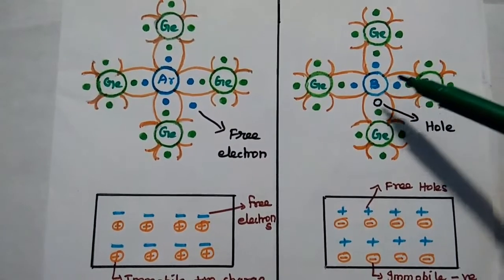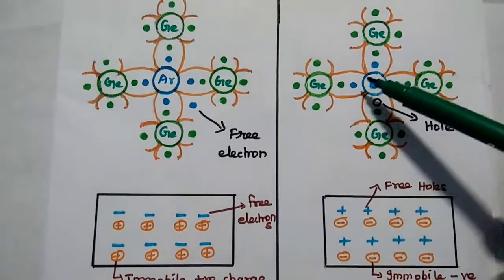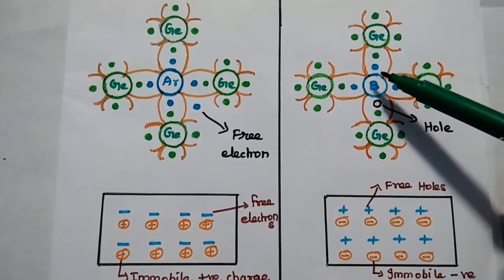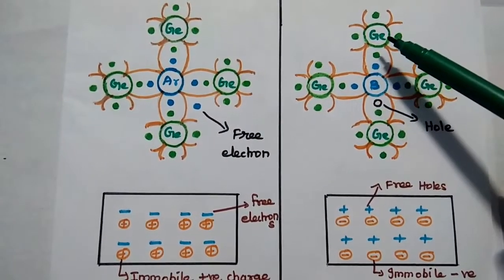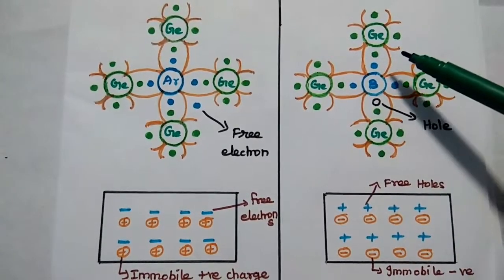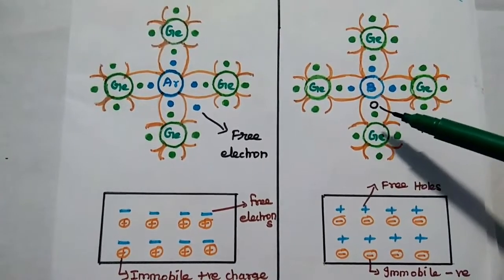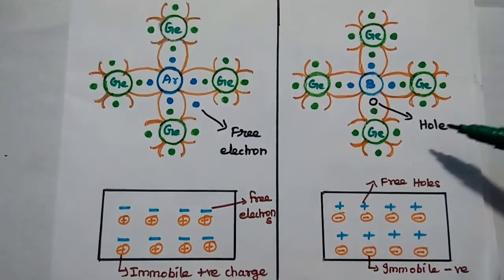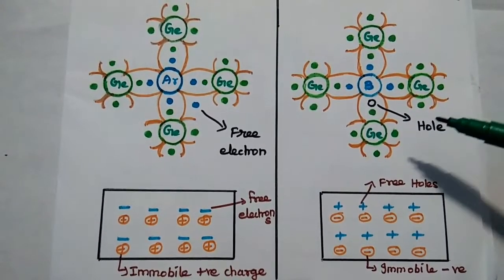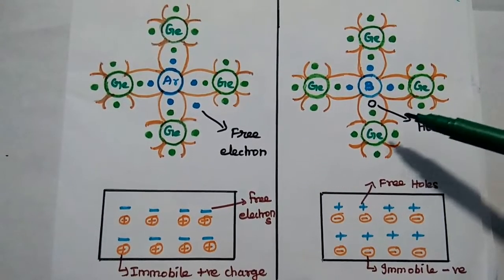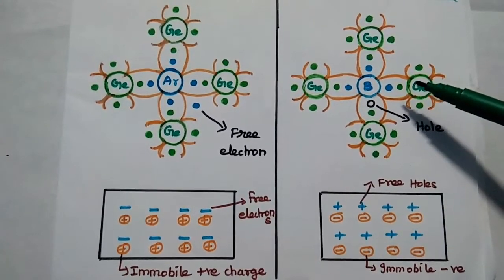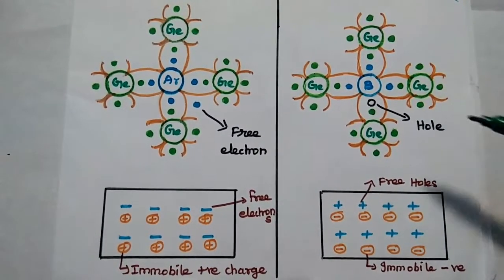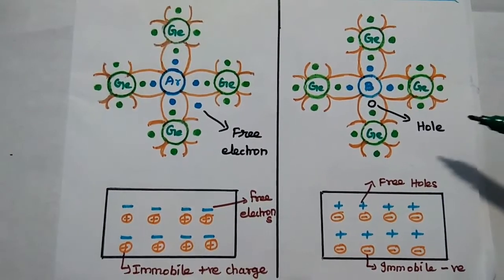Similarly, in P-type, we are going to add trivalent impurities. Three valence electrons are coupled with the germanium atoms using covalent bond, but the fourth bond becomes incomplete. It can create a free hole. By adding trivalent impurities to this germanium material or pure semiconductor material, we can create a large number of holes.